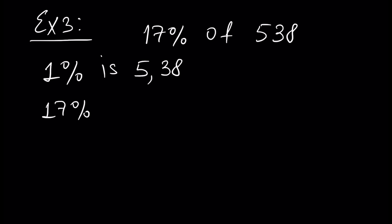Example 3: let's calculate 17% of 538. First of all, 1% of our number is 5.38, and to find 17% of 538 we have to multiply 5.38 by 17. Let's perform the calculation: 5.38 times 17.